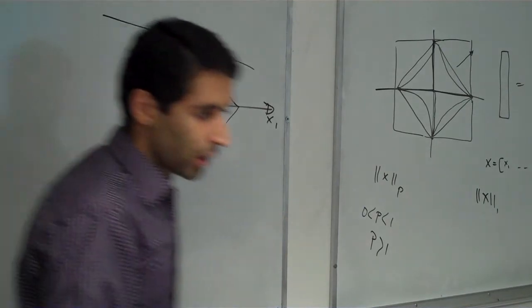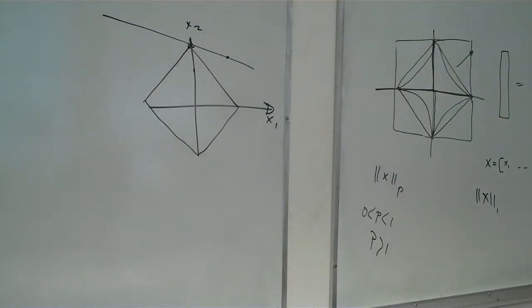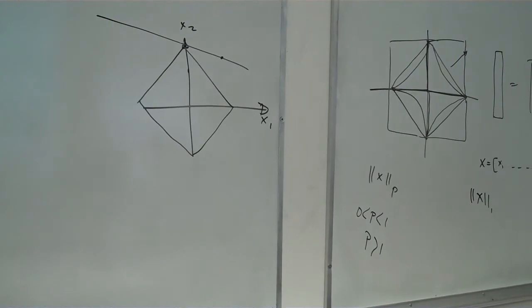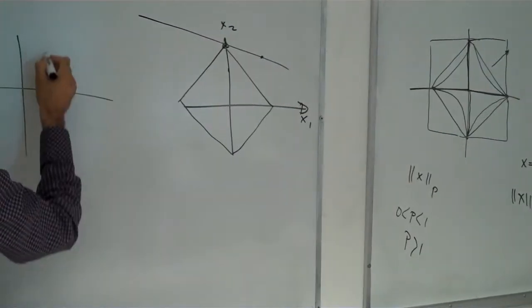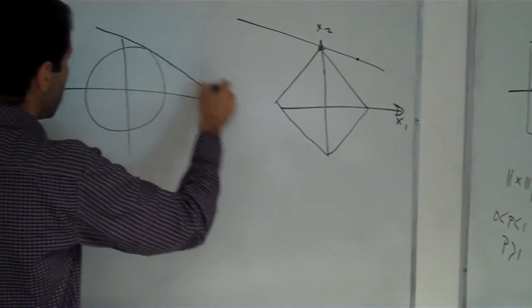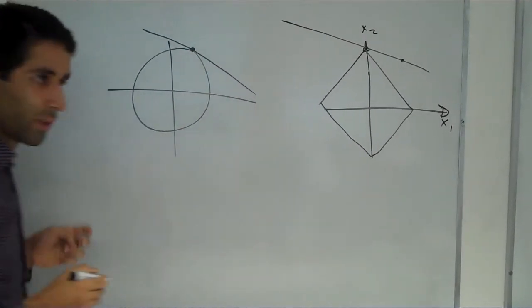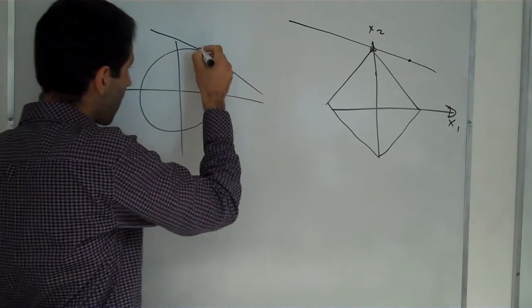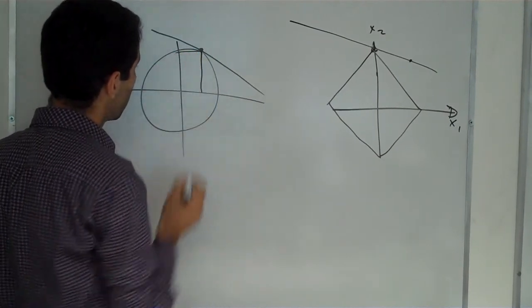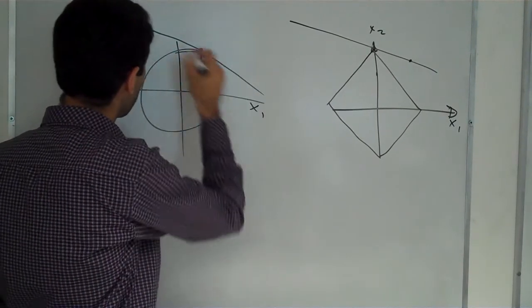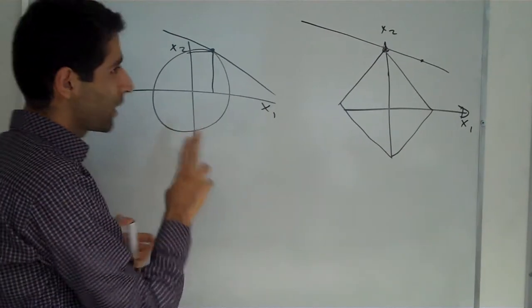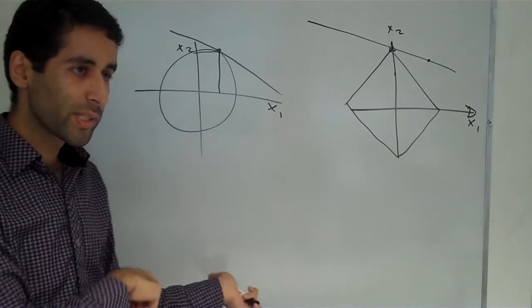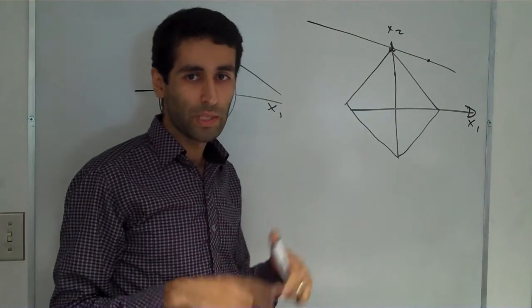But if I use L2 norm, as you can see, the line crosses here the value, and we have two x1 and x2, and it is not near to the sparsity that I need in compressive sensing.